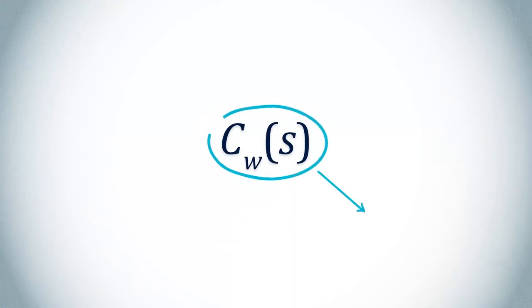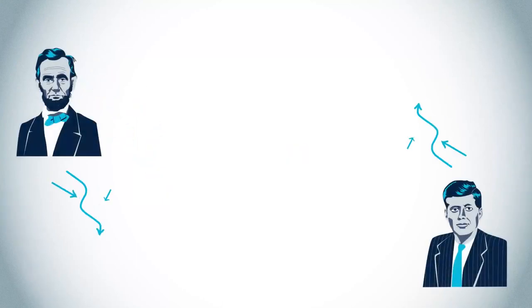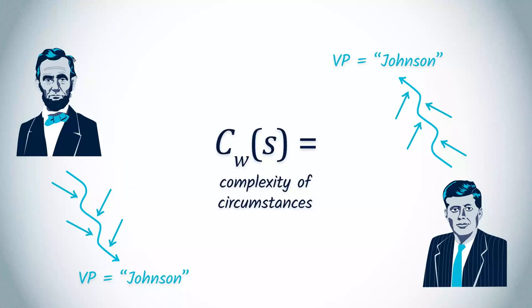Causal complexity measures the role of chance in the production of a situation. In algorithmic information terms, it corresponds to the complexity of the circumstances that allowed the situation to come to existence. For any fact S that is true in the world, for instance, the fact that the vice president's name is Johnson, we can imagine a set of circumstances that led to that state. Causal complexity CW(S) measures the size of the minimal description of these circumstances.